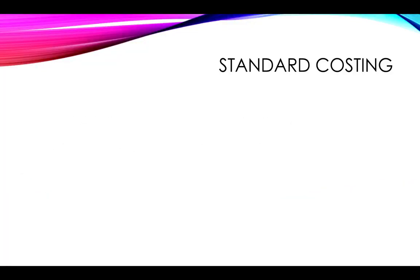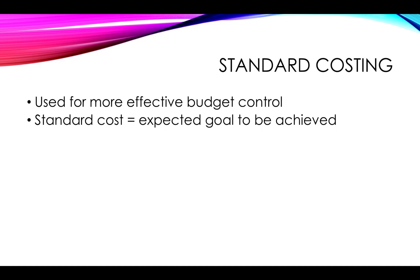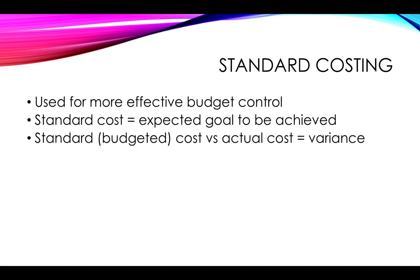Standard costing is a way of costing products by looking at what you expect the individual costs to actually be. However, it is more effectively used as a way of controlling a budget. The purpose of budgets is to monitor actual activity against what was planned. Where standard costing is used, you can set what you think each particular cost should be, making it easier to look at variances. The standard cost is the budgeted or expected cost for each individual item, and the difference between that and actual cost is known as the variance.